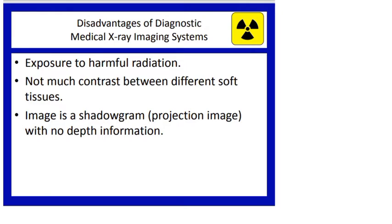The main advantages of X-rays are that they are widely available, relatively cheap compared to other imaging systems like MRI and CT, simple to maintain, and there are many trained professionals available, keeping expertise costs low. However, X-ray imaging must be done carefully. Disadvantages include exposure to harmful radiation, poor contrast between different soft tissues, and the fact that the image is essentially a shadowgram or projection image, meaning depth information is lost.